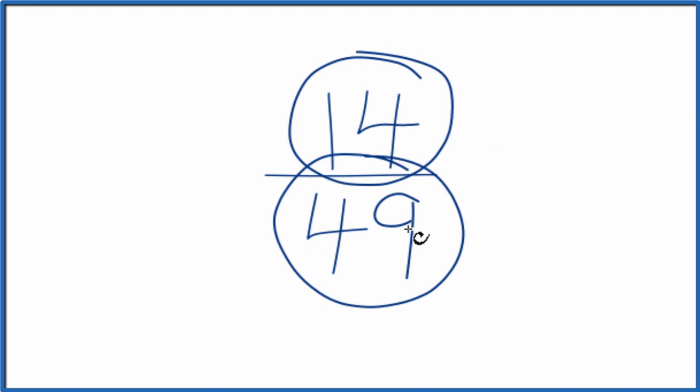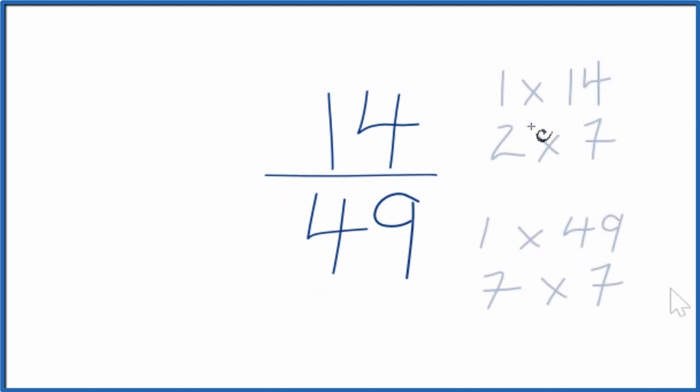So let's write the factors for 14 and 49. So these are the factors for 14 and then for 49. We're looking for the greatest common factor, and that looks like 7 is the greatest common factor.